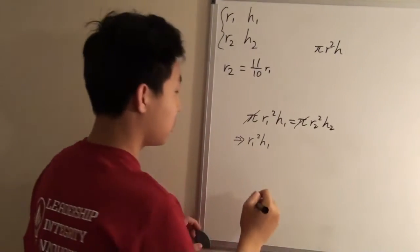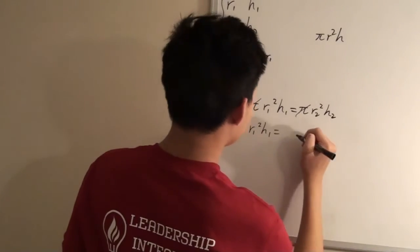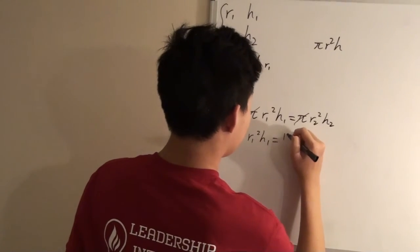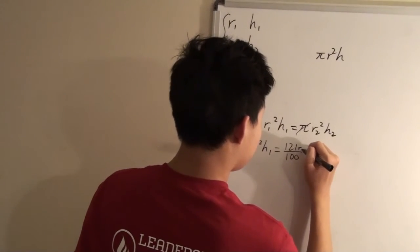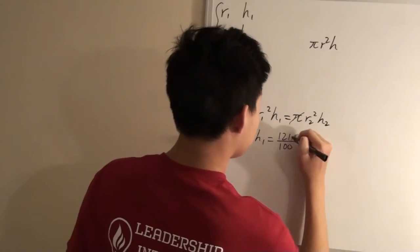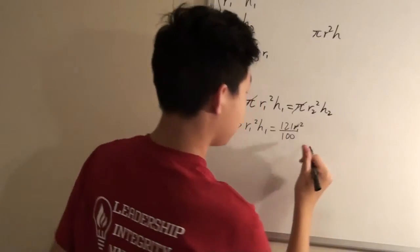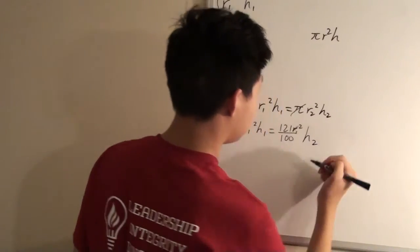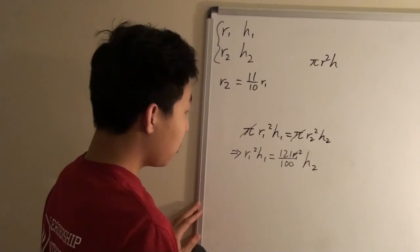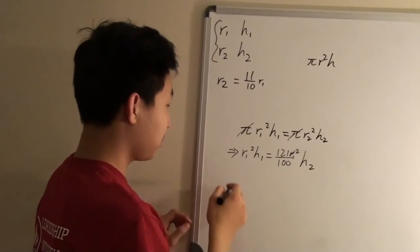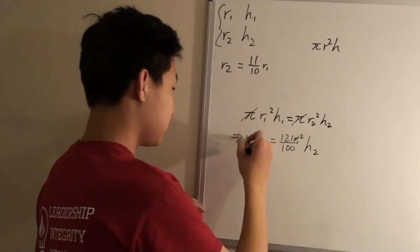This gives us r₁²h₁ = 121/100 × r₁² × h₂. Now we can cancel out r₁² from both sides.